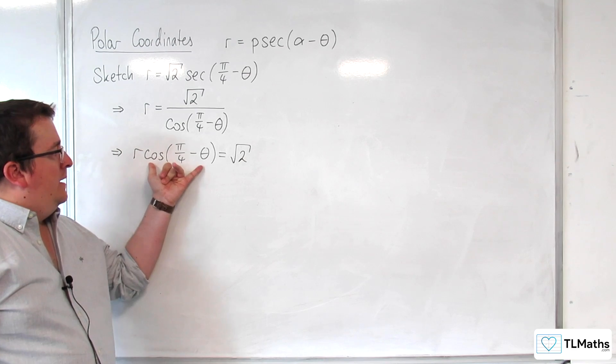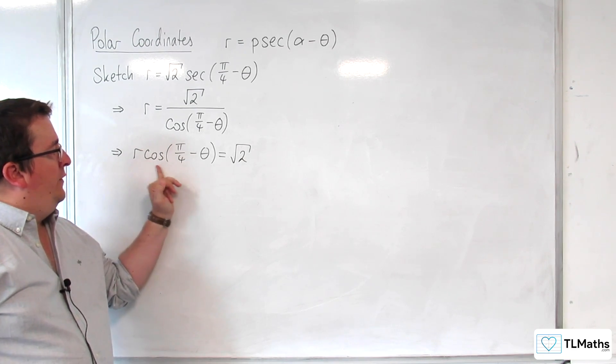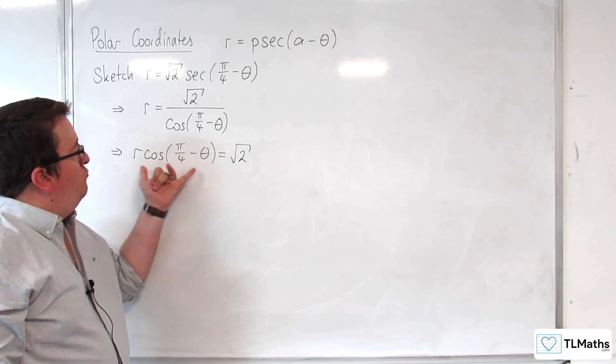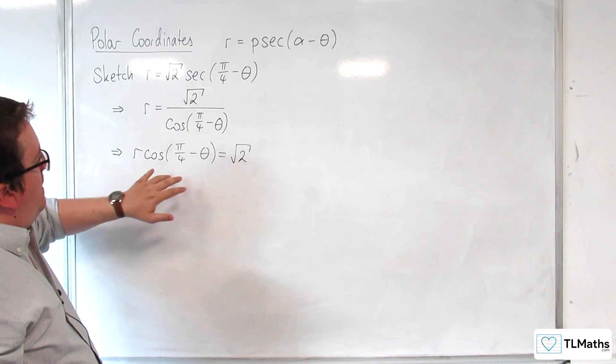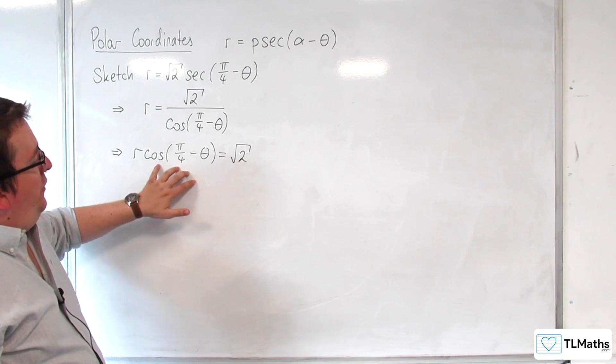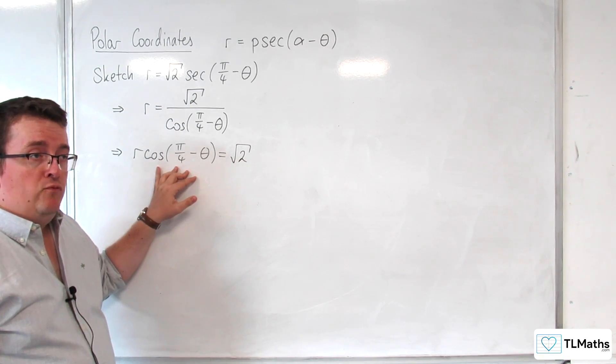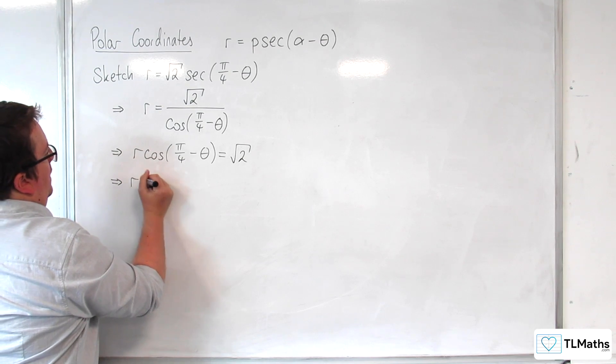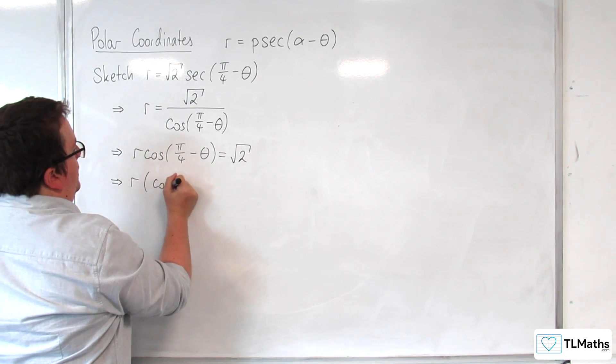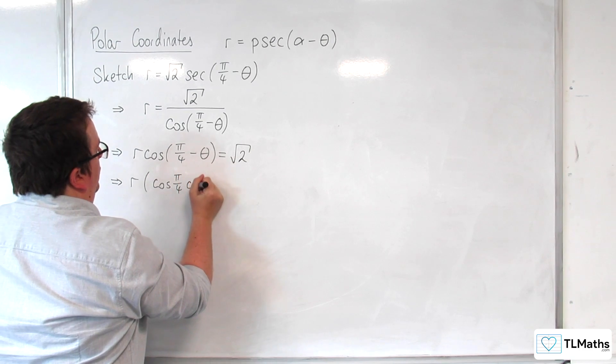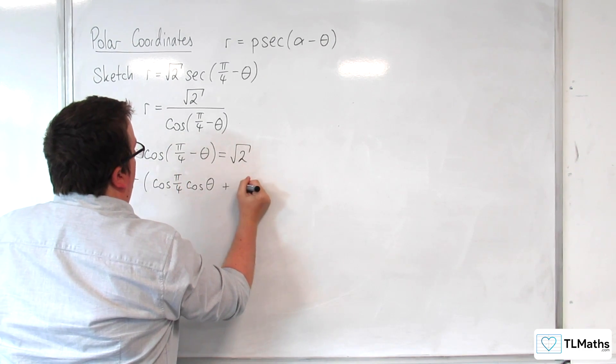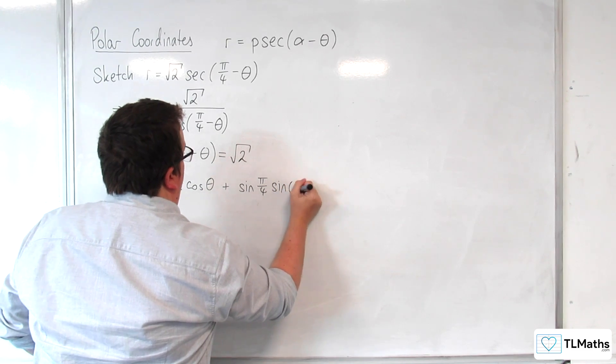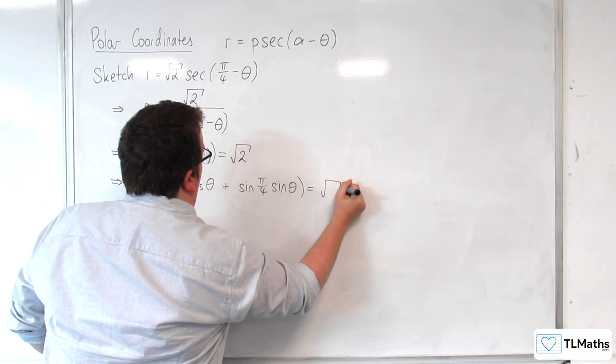Now this bit here, we can start to see that we've got this r cosine theta perhaps. But in its current form, we can't really infer much from it. So what we'll do is we'll use the compound angle formula to break this apart. So that would be r times cosine pi over 4 cosine theta plus sine pi over 4 sine theta is equal to root 2.